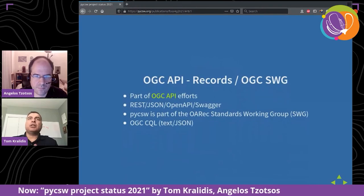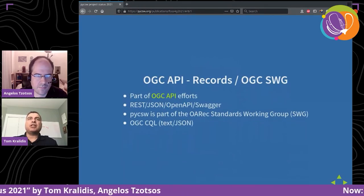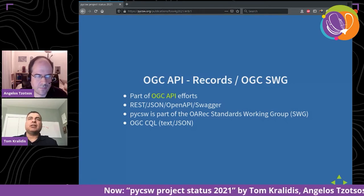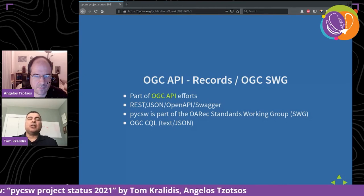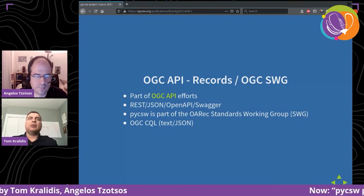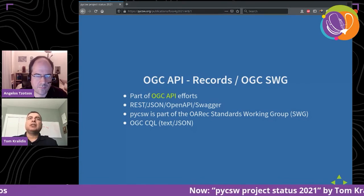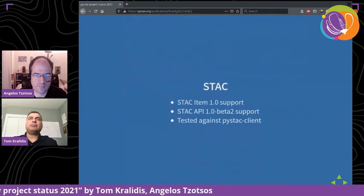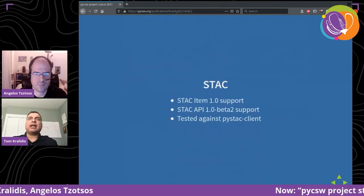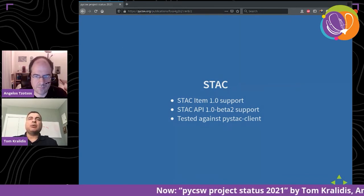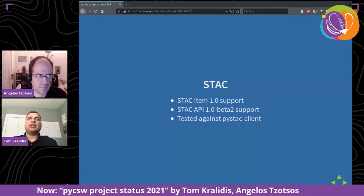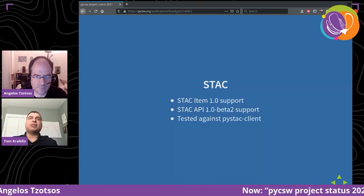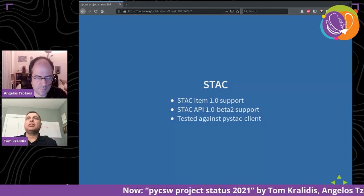For the roadmap: we've done quite a bit of work on Earth observation and recent standards, but we want to continue on the OGC API Records trail to make sure it's implemented properly. Our goal is to become a reference implementation, just as we are for CSW. We're going to add support for Common Query Language (CQL) both as text and as a JSON HTTP POST payload. We're extending our STAC support and watching for convergence between STAC and OGC API in terms of query languages.